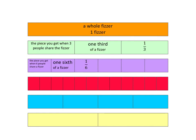Focus on the red fizzer now. The pieces are too small for me to write in, so I'm just going to tell you about it. With the red fizzer I've cut it up into 12 pieces and so I'm sharing this fizzer between 12 children. The name of each of these little pieces is one twelfth, written like this. The 12 at the bottom tells us we've cut the fizzer up into 12 pieces and each person is just getting one of those pieces.